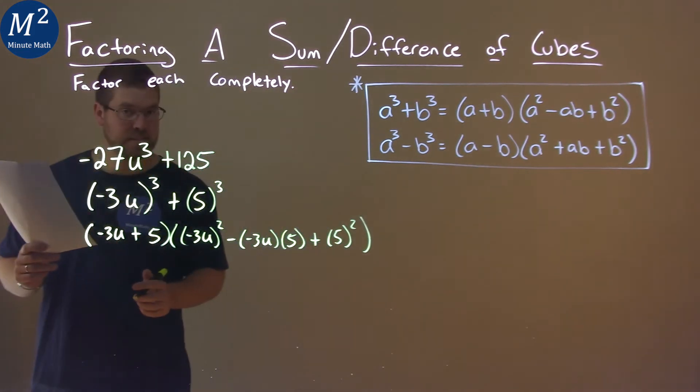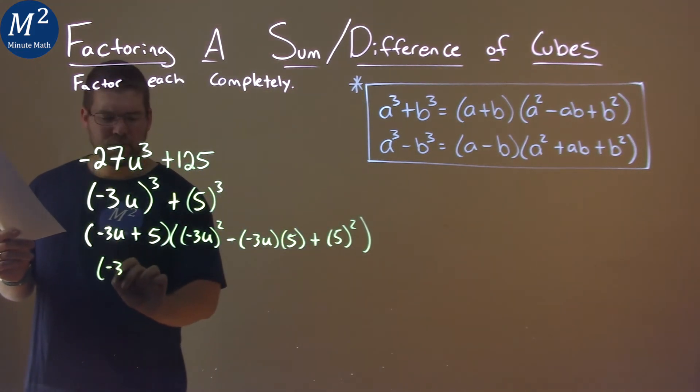And so now let's simplify. The negative 3u can just stay and the plus 5 can stay there.